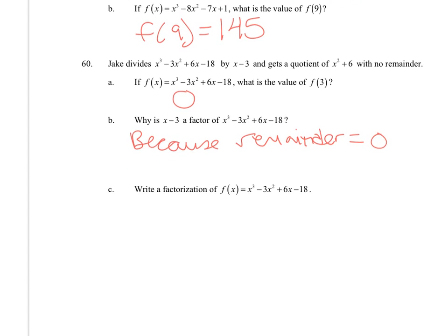Let's factor. When we've divided, x - 3 is a factor, and we were left with x² + 6. So writing f(x) in factored form, we'll get (x - 3)(x² + 6).